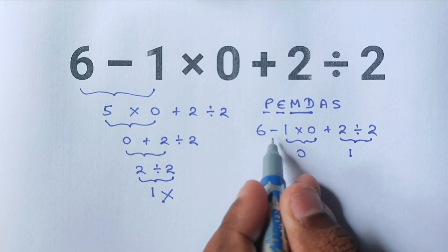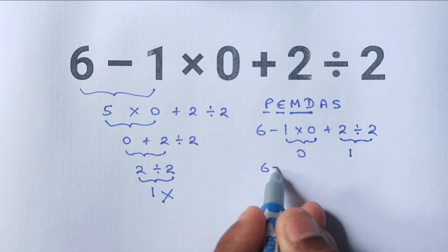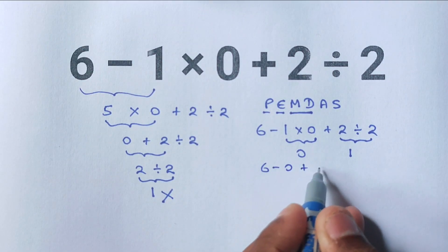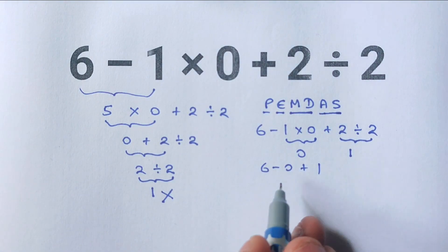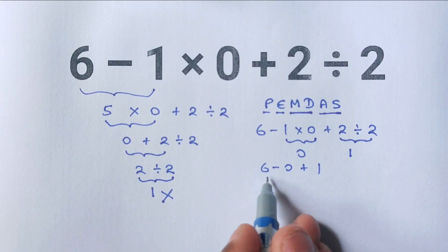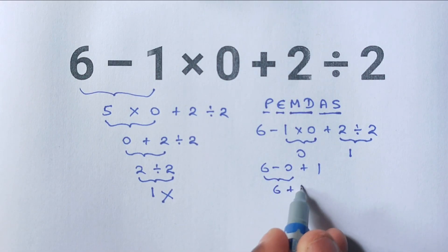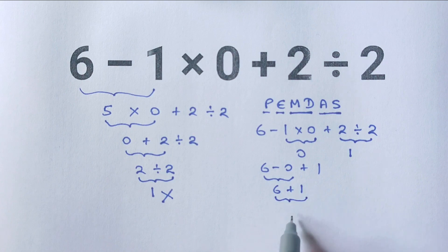That means the expression now becomes 6 minus 0 plus 1. Finally, we move on to addition and subtraction, going from left to right. 6 minus 0 equals 6, then 6 plus 1 equals 7. So the correct answer to this problem is 7.